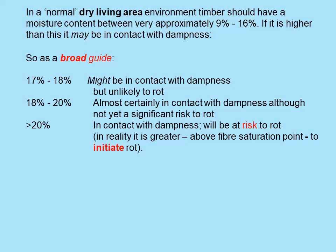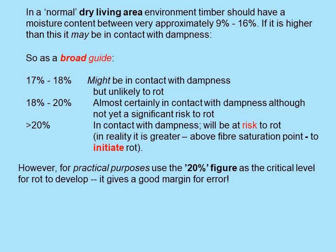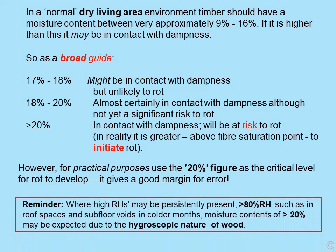In reality, it is above the fibre saturation point that is needed to initiate rot. However, for practical purposes, I would use the 20% figure as the critical level for rot to develop, as it gives a very good margin for error. As a reminder, where high relative humidities may be persistently present — namely 80% plus, as found in roof spaces and subfloor voids in the colder months — one may expect moisture content in excess of 20% due to the hygroscopic nature of the wood.